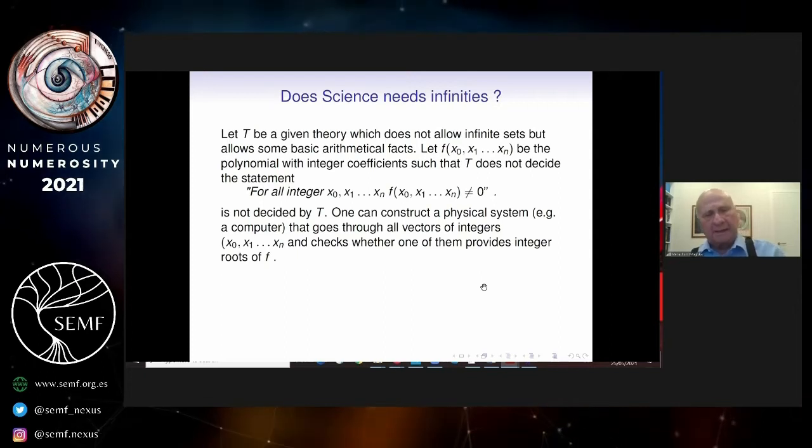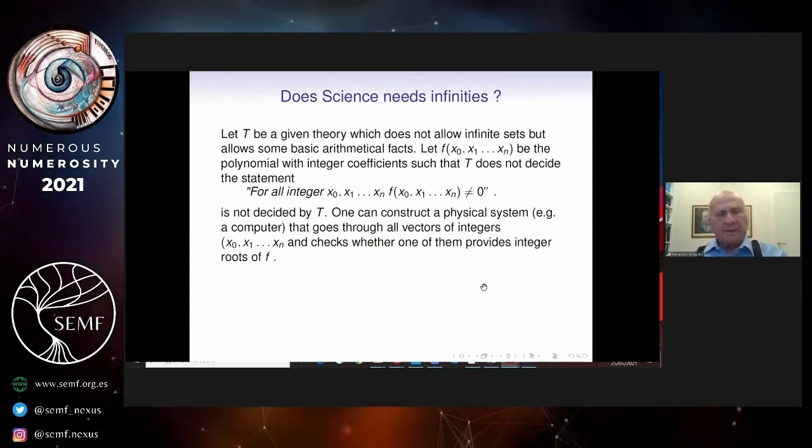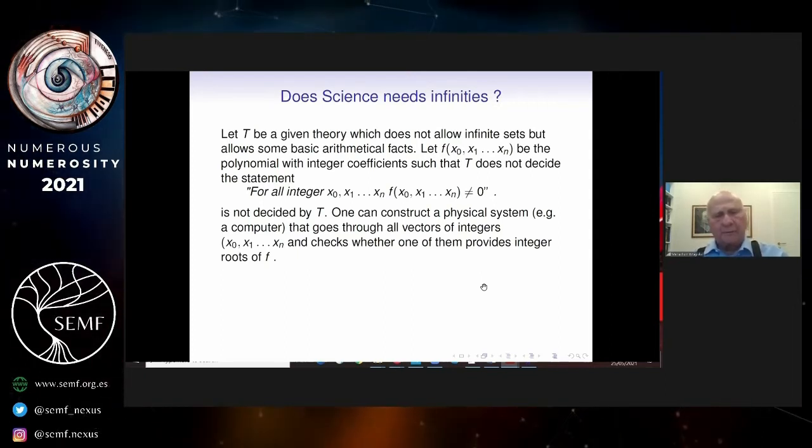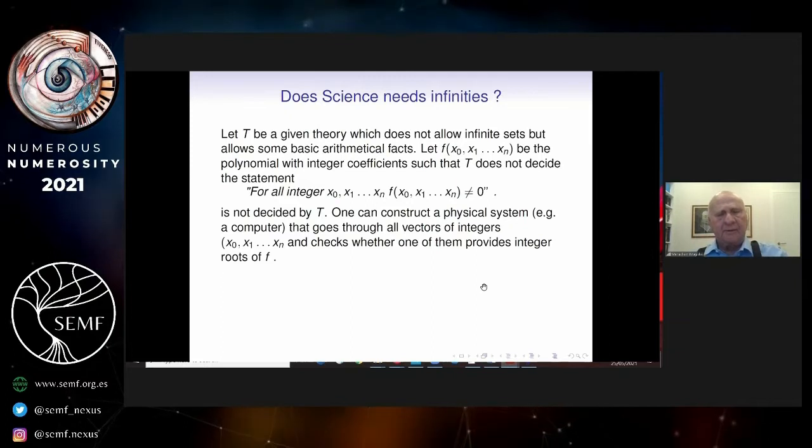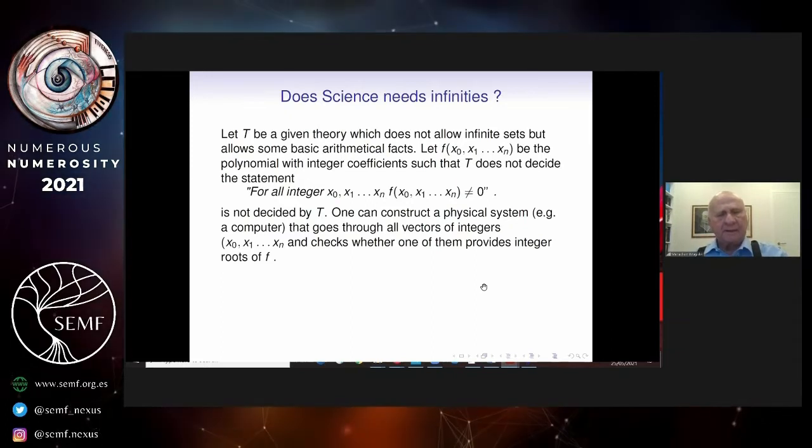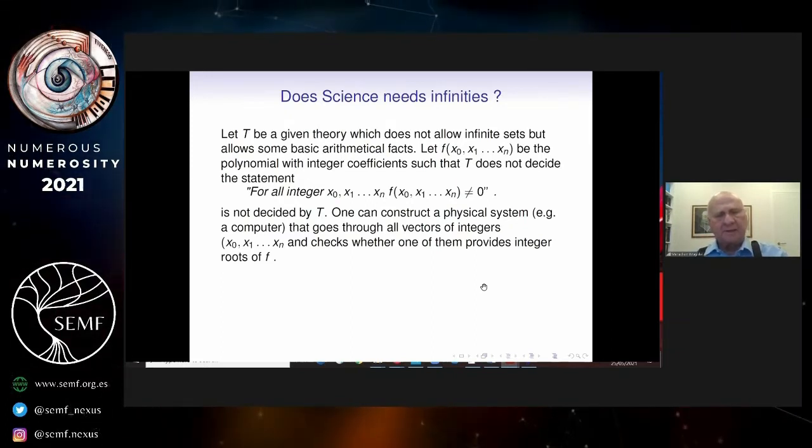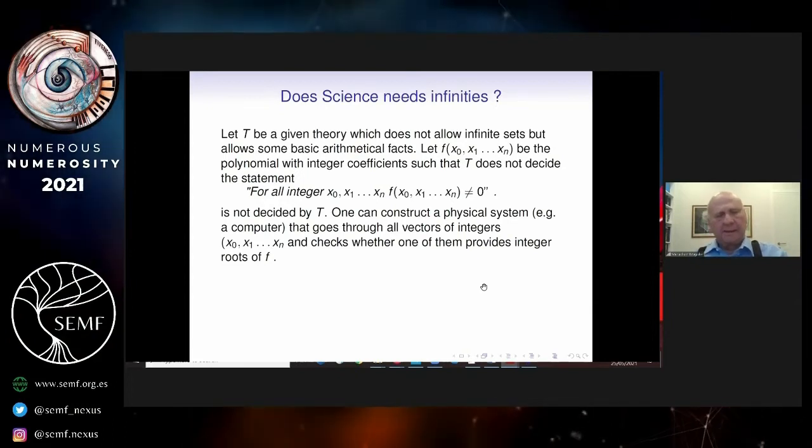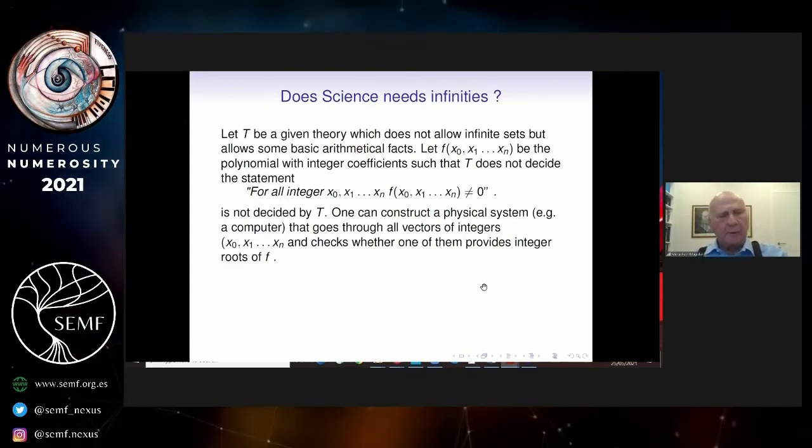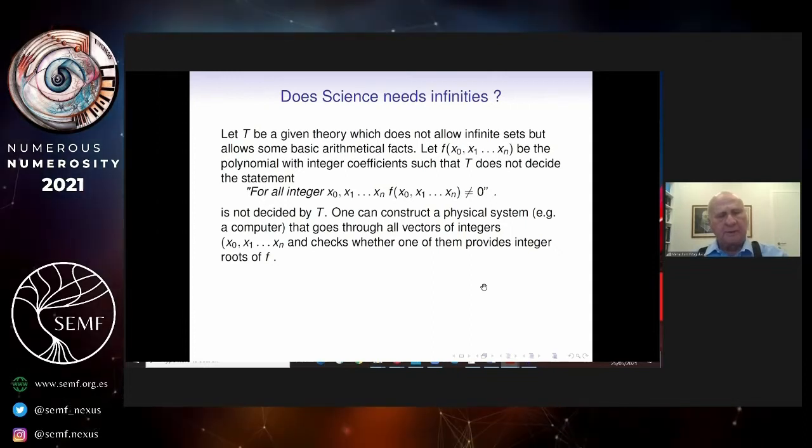Namely, we can apply Gödel's incompleteness theorem. So again, let's look at the concrete form of Gödel's incompleteness theorem. We've got a polynomial with integer coefficients, such that the theory T does not decide the statement that for every integer, the polynomial is not zero. There are no integer roots to this polynomial. It's not decided by T.